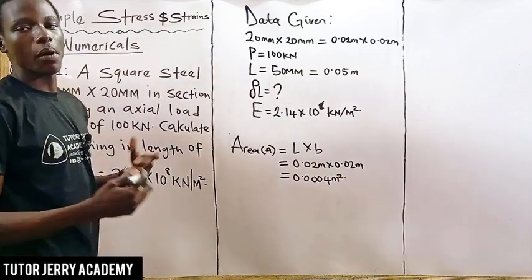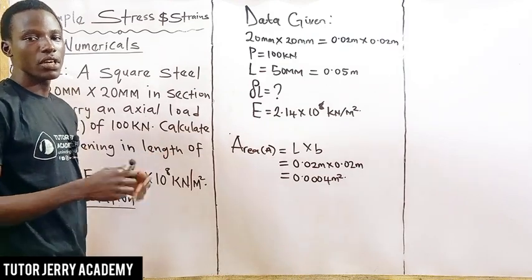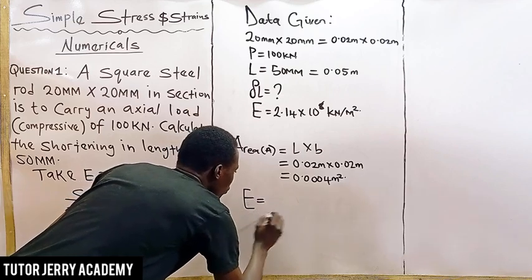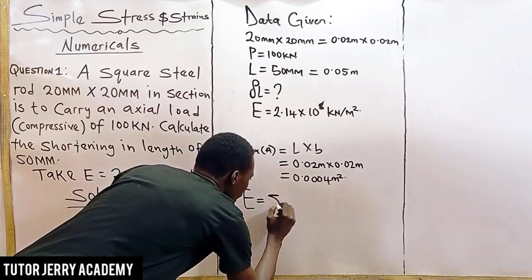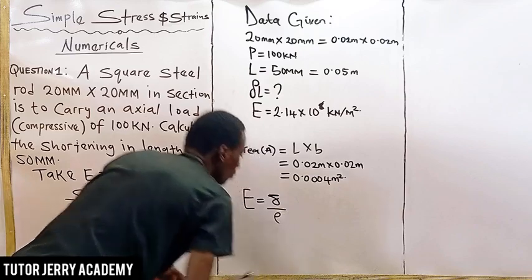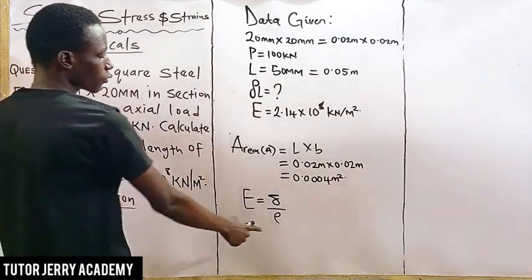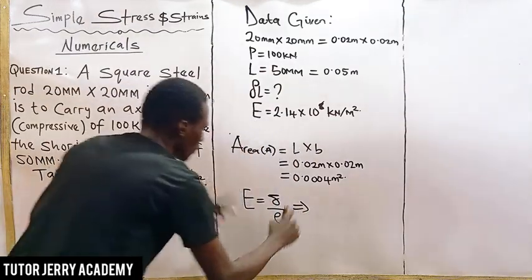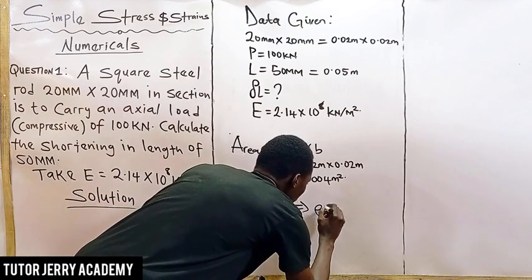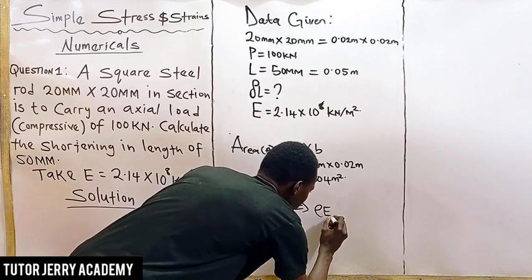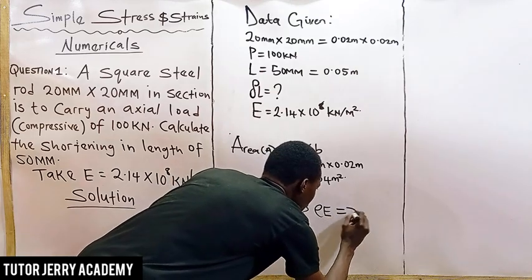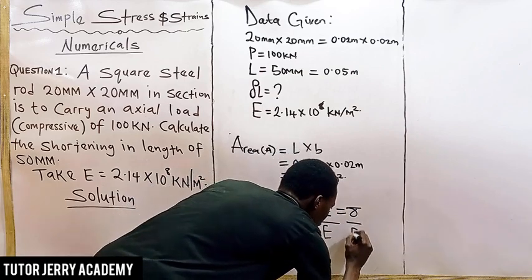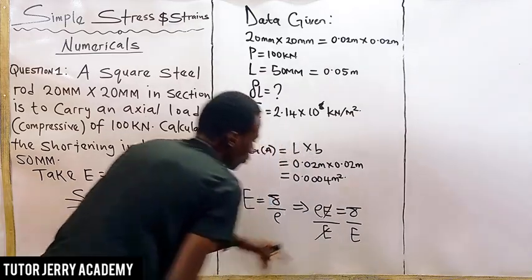From our relationship of stress and strain, we know that modulus of elasticity E is equal to stress sigma divided by strain. We are going to make strain the subject of this relation by cross-multiplying by E, our modulus of elasticity.